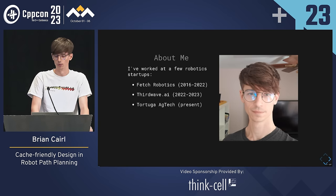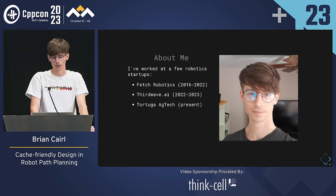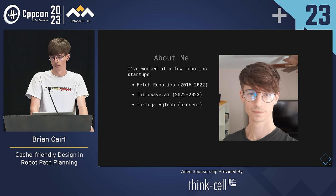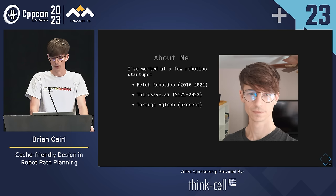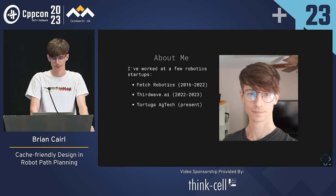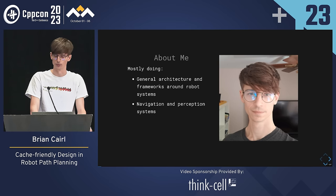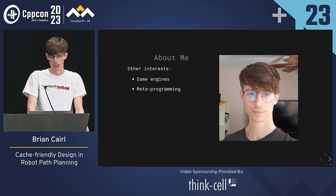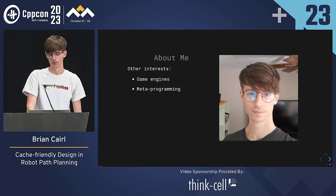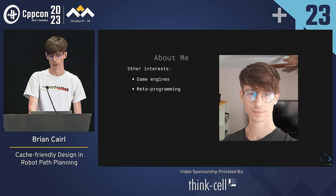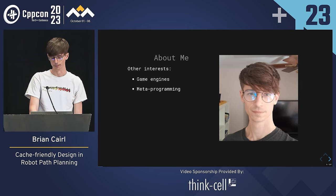I mostly worked on mobile robot systems which operate in warehouses, but for the past few months I've been working at a robot agriculture company called Tortuga AgTech. So for the first time in seven years, I'm finally getting some fresh air. I typically write broader robot systems code, but I've focused mostly on navigation and perception. Besides coding for work, I also code for fun — in a thousand years I'll finish a game engine. And to procrastinate, I fool around with template metaprogramming.